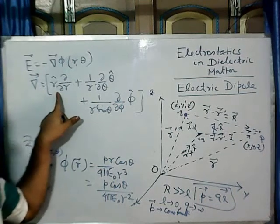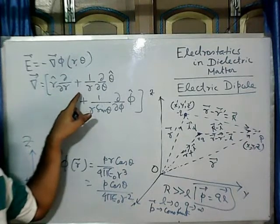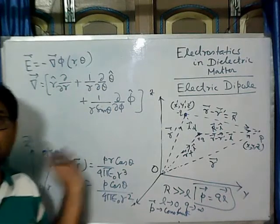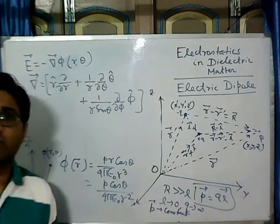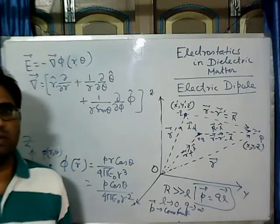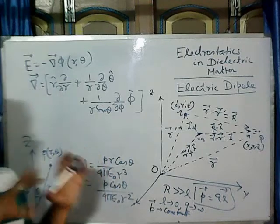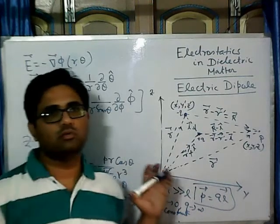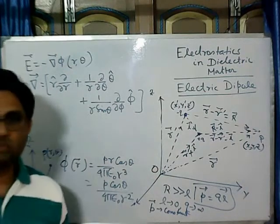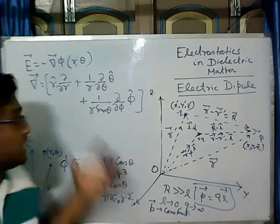R hat is the unit vector along the radius: R hat del/del R, then 1 by R del/del theta, and theta hat. This can be easily derived from the general form in Cartesian coordinates — i del/del x plus j del/del y plus k del/del z — using the transformation equations from Cartesian to spherical polar coordinates.